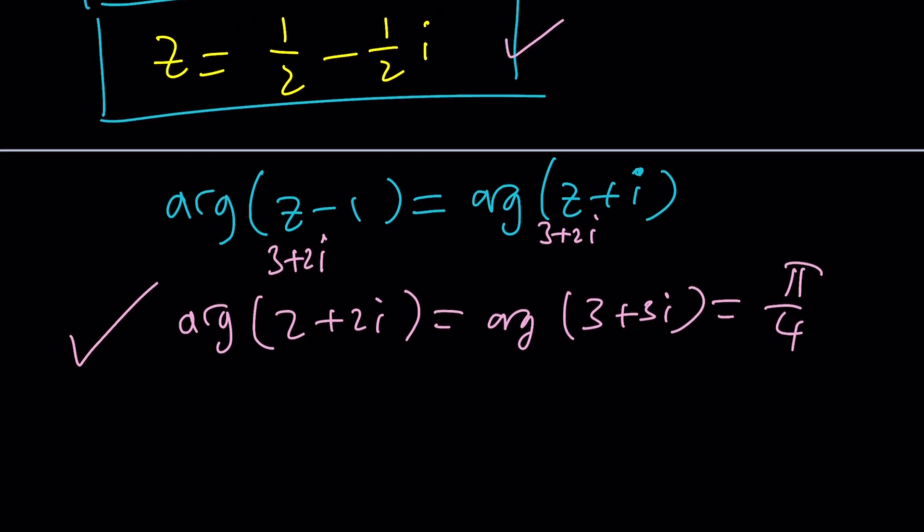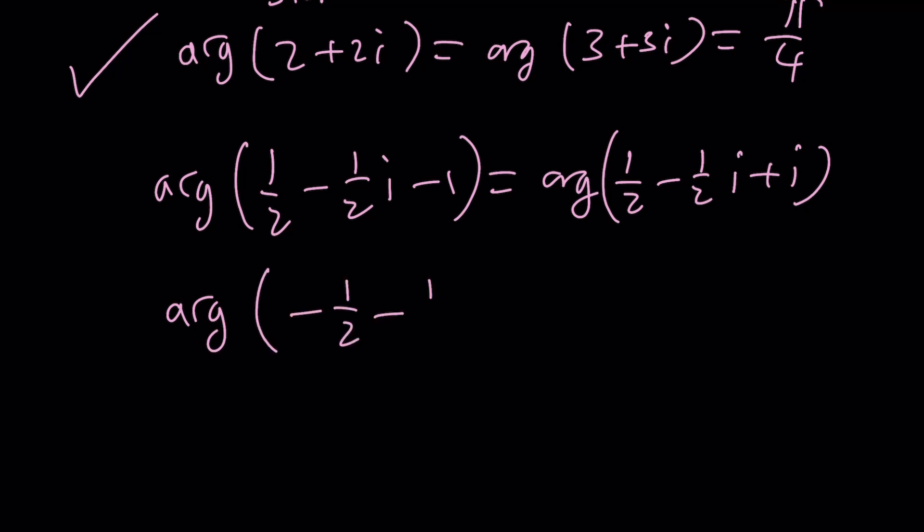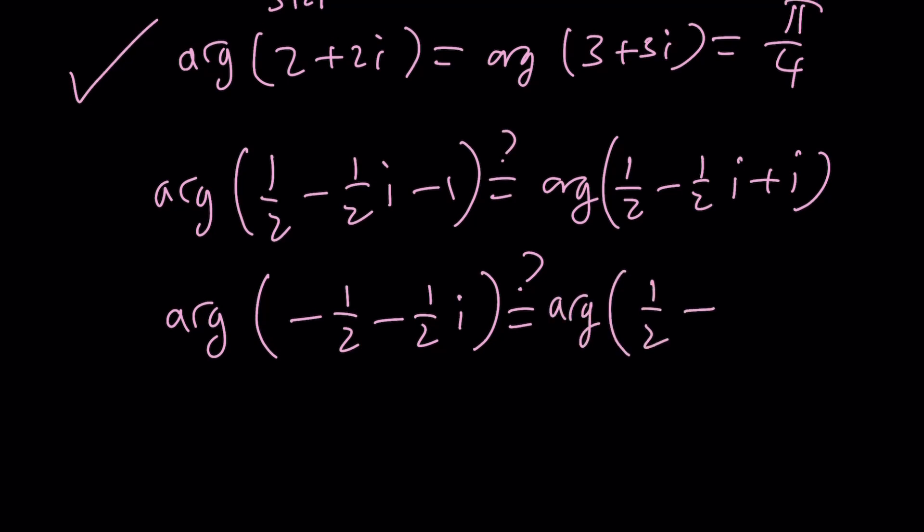Okay, let's go ahead and do the second one. If you replace Z with one half minus one half I, subtract one from it, and then argument of one half minus one half I plus one I. So one half minus one is going to be negative one half. So there's going to be argument of negative one half minus one half I. Is that equal to one half plus one half I? And this is definitely not true because this number is in the first quadrant. This is in the third quadrant. They definitely have different arguments. So where does this problem come from? Well, here's the thing.